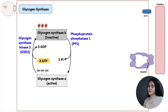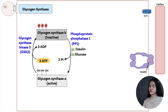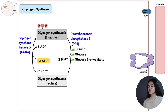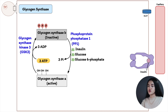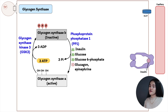The enzyme that converts glycogen synthase to its inactive form is glycogen synthase kinase 3 (GSK3). Glycogen synthase a is activated by insulin — secreted when there is excess glucose — causing cells to take up glucose and convert it to glycogen for storage. Glucose itself also triggers this reaction, stimulating hexokinase and increasing glucose 6-phosphate levels.